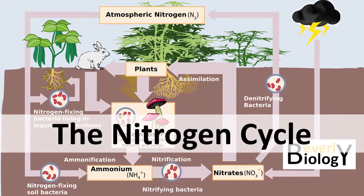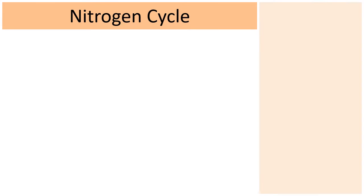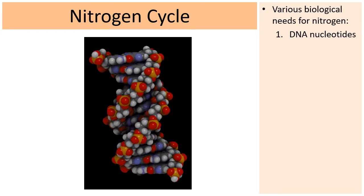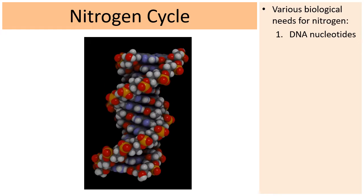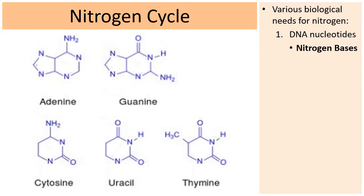The topic of this presentation is the nitrogen cycle, which is a bit complex. Why do we even need nitrogen for our cells? Here's a molecule of DNA — the building blocks of DNA are called nucleotides. Looking at the nucleotides more closely, one of the parts is called the nitrogen bases, abbreviated A, T, C, and G, and U for uracil in RNA.